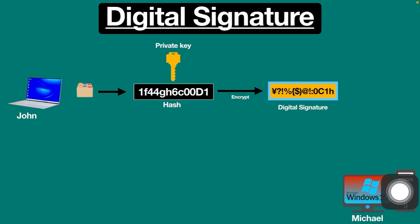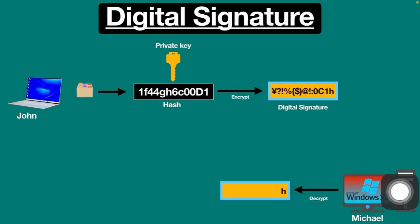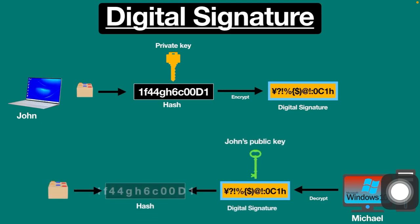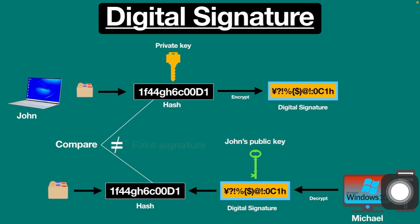The original document along with its digital signature is sent to Michael. After Michael receives the document, his computer decrypts the digital signature using John's public key, then calculates the hash of the received message, and compares it with the hash from John's message. If any difference appears in the hash values, it means the message has been tampered with and the digital signature is fake. If both hashes match, Michael knows the digital signature is valid and the message is real.